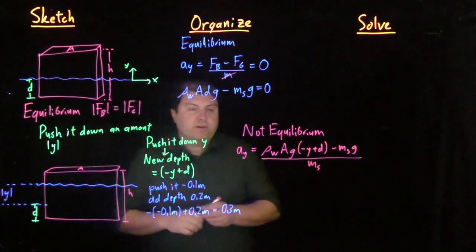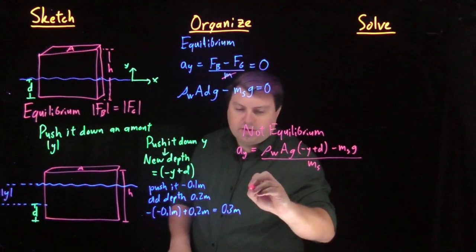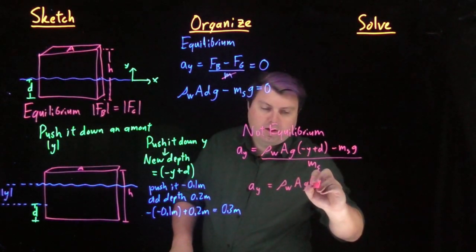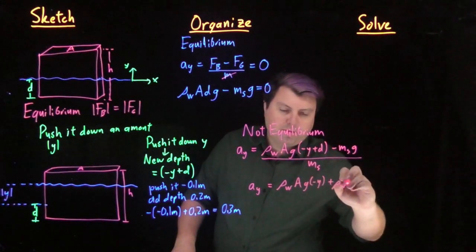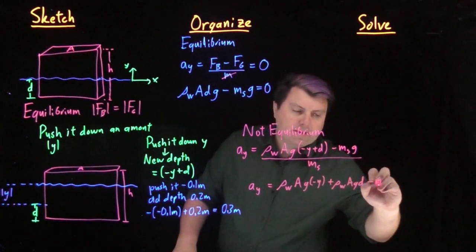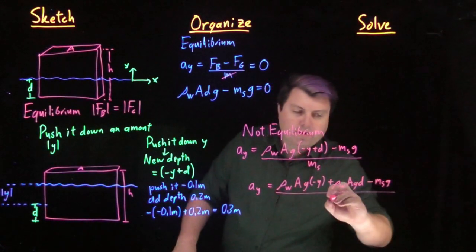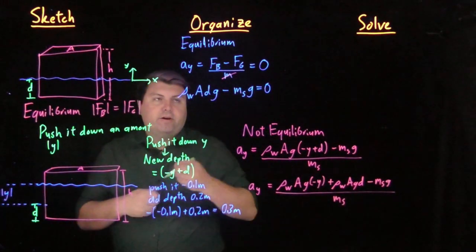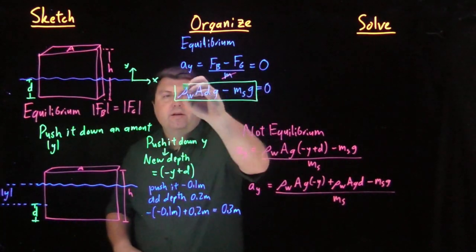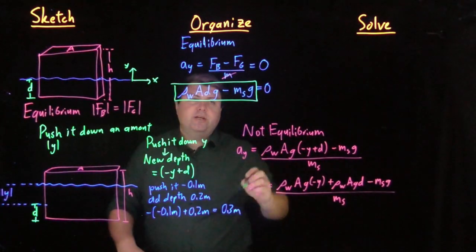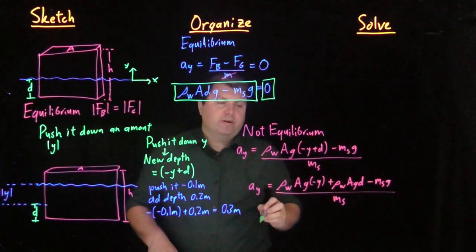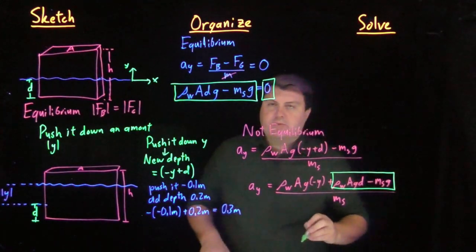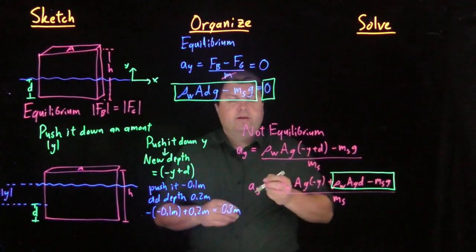So everything's looking good. I can expand this out. This a_y equals ρ_w A g negative y plus ρ_w A g d minus m_s g over m_s. Now why did I write all of this out? I wrote all of this out because every time I see ρ_w A d g minus m_s g, I can replace it with zero. So looking over here, I have ρ_w A g d minus m_s g, so I can replace it with zero.